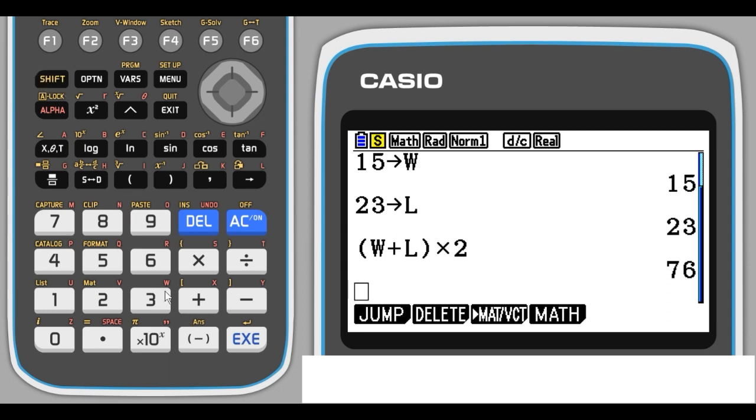So we do SHIFT, and then ANSWER above this negative sign here, and times, as the fence costs $70 per meter, times 70 EXE. And that's the total cost of the fencing.